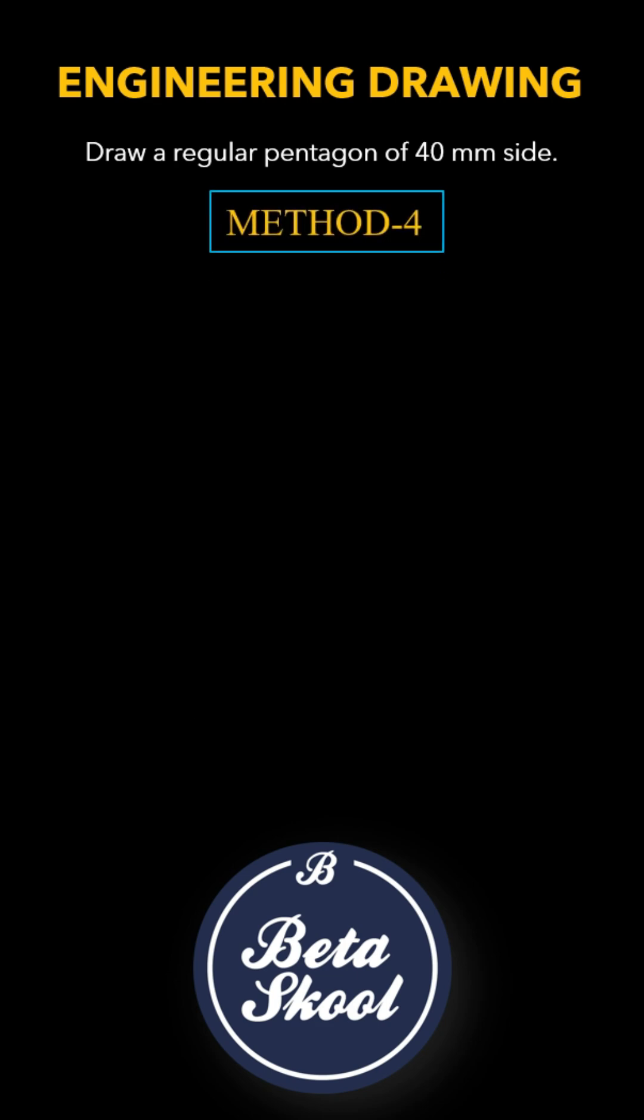First begin by drawing a 40mm line segment and label it AB. This will be the base of our pentagon.